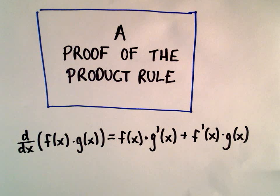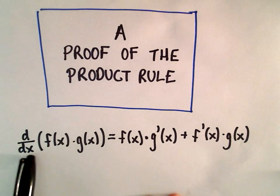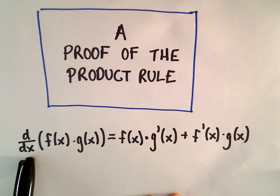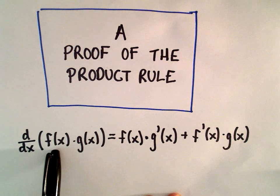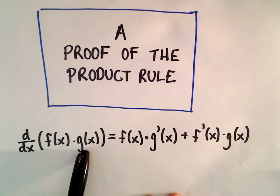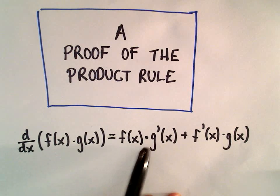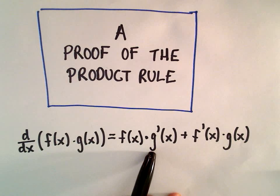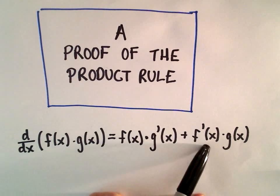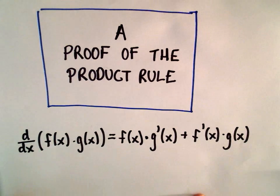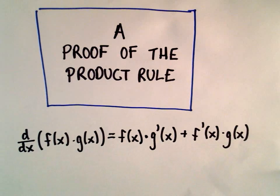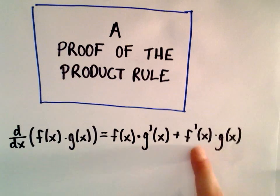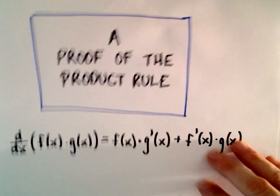Here I'm going to do a proof of the product rule from calculus. Recall the product rule says that the derivative with respect to x of the product of two functions, f of x times g of x, is going to be f of x times g prime of x plus f prime of x times g of x. You can obviously flip the order on these due to the addition sign. So let's prove this result.